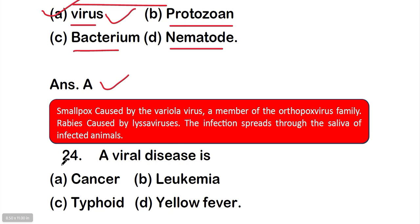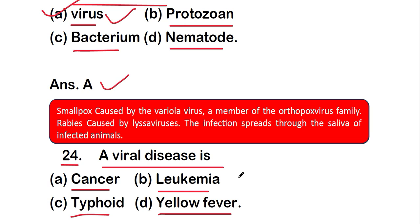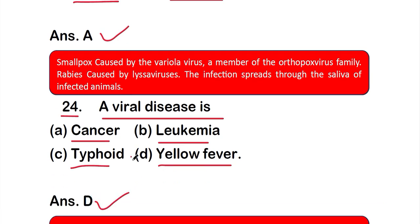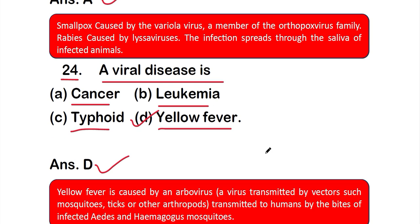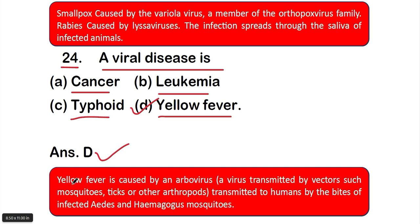Question number 24: A viral disease is — Option A: cancer, Option B: leukemia, Option C: typhoid, or Option D: yellow fever. The right answer is Option D, yellow fever. Yellow fever is caused by an arbovirus — a virus transmitted by vectors such as mosquitoes, ticks, and other arthropods — and is transmitted to humans by the bites of infected Aedes mosquitoes.